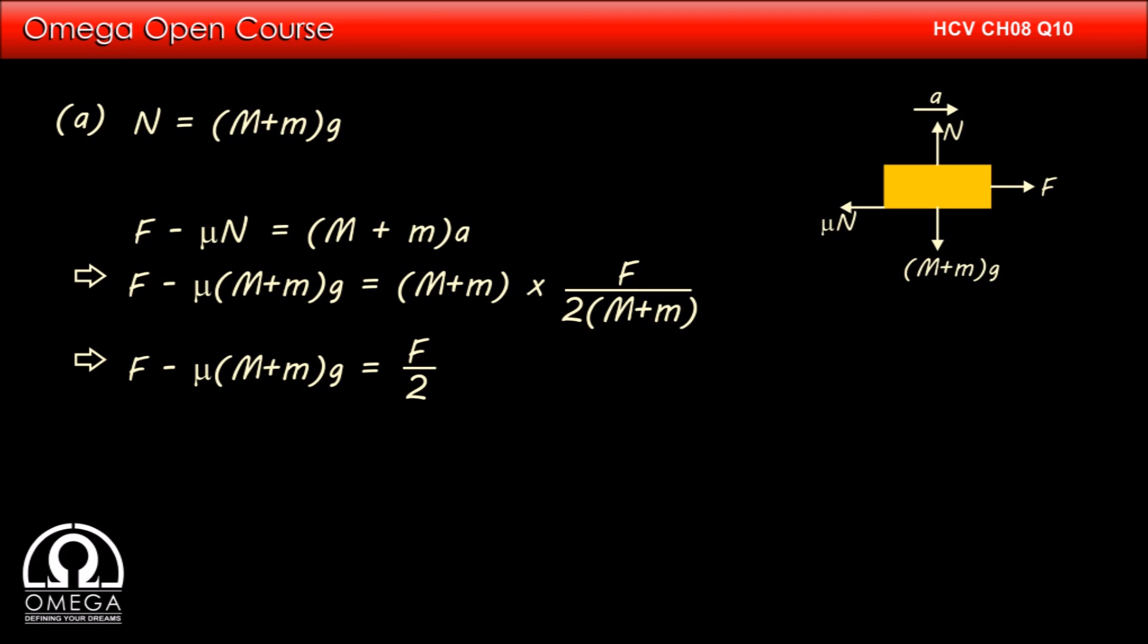Which implies F minus mu into capital M plus m into G is equal to F by 2. Simplifying, we get mu is equal to F divided by 2 into capital M plus m into G. This is the answer to part A of the question.